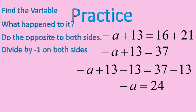37 minus 13 gives me 24. So now I have negative a is equal to 24. I need to divide both sides by negative 1, and that changes the sign on both terms. Negative a becomes positive a. Positive 24 becomes negative 24.